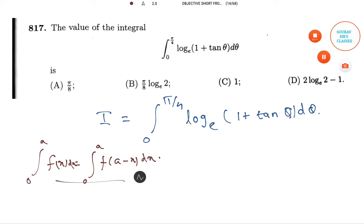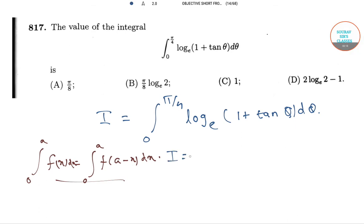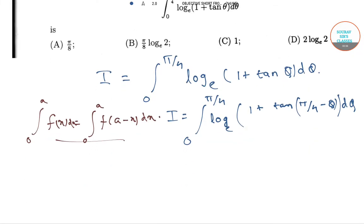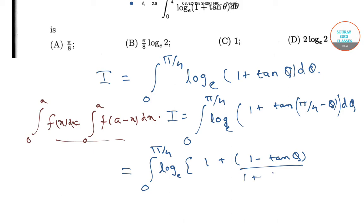Using this property, we get i is equal to integration from 0 to π/4 of log base e (1 + tan(π/4 − θ)) dθ, which is equal to integration from 0 to π/4 of log base e of (1 + (1 − tan θ) / (1 + tan θ)) dθ.